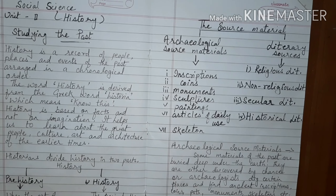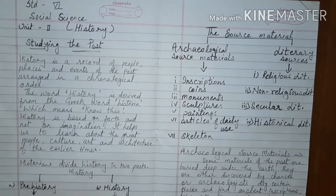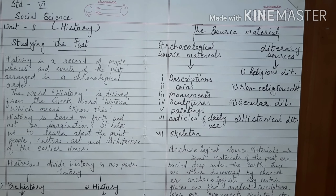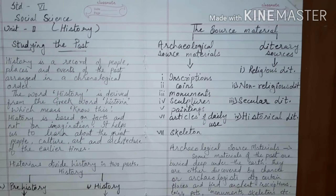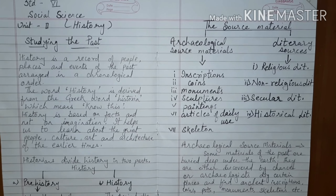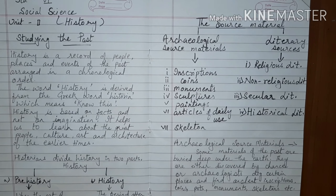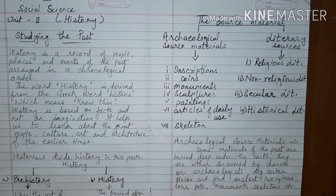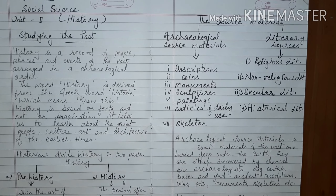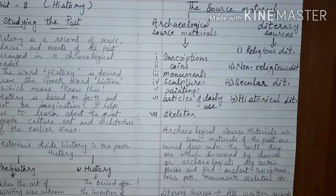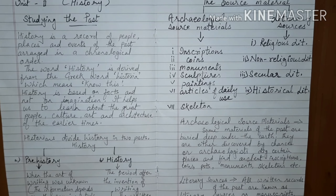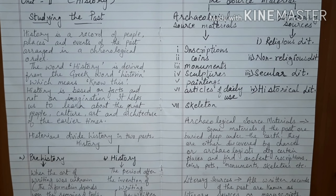Archaeological source materials: some materials of the past are buried deep under the earth. They are either discovered by chance or archaeologists dig certain places and find ancient inscriptions, coins, pots, or buildings. The study of these remains tells archaeologists about the religious, social, and cultural conditions of that time. For example, buildings excavated from Mohenjo-daro provide useful information about the Indus Valley civilization. The archaeological source materials are mainly inscriptions, coins, monuments, sculptures, paintings, articles of daily use, and skeletons.